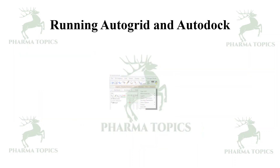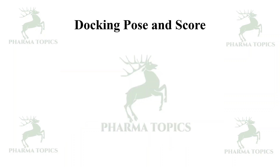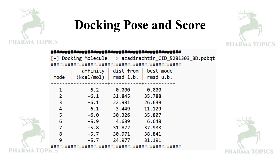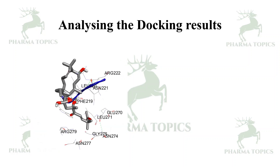Then you run AutoGrid and AutoDock: fix the docking protocol and run AutoDock so the ligand is flexed within the protein's active space. You can then view the docking poses and docking scores. In the example shown, you can see the binding affinity for the ligand, the root mean square deviation (RMSD), and the docking scores.